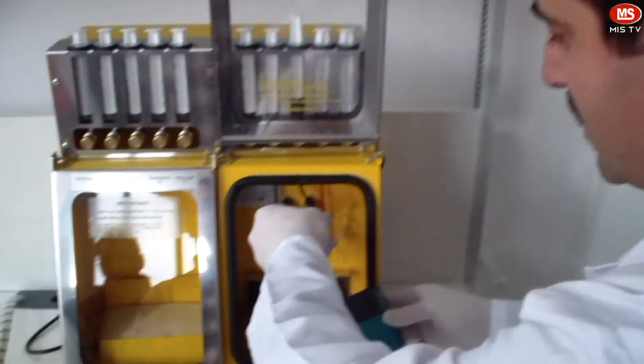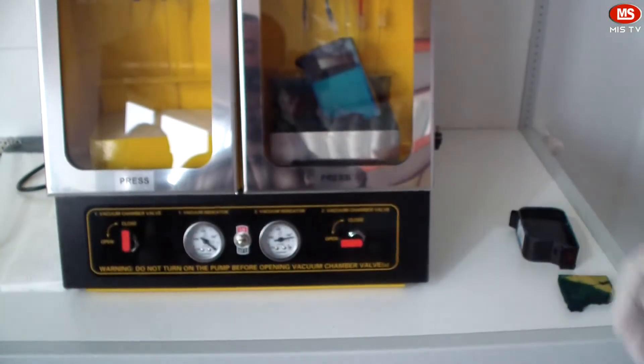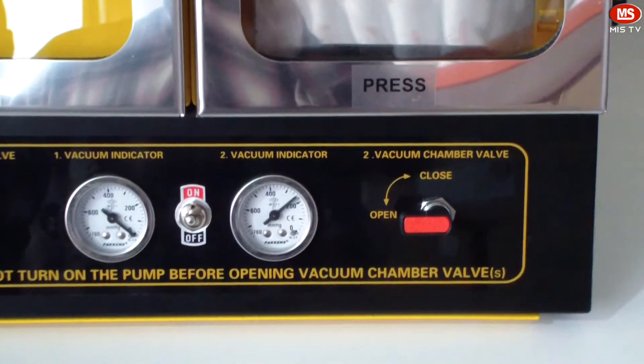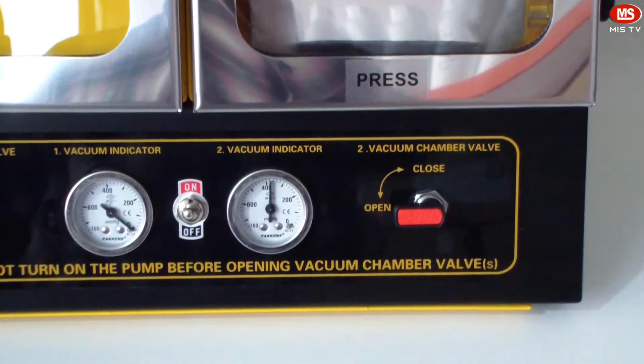We insert the needle through the fabricated hole and start our machine. When it reaches 520 torque, we stop our machine and fill the syringe to measure the ink.